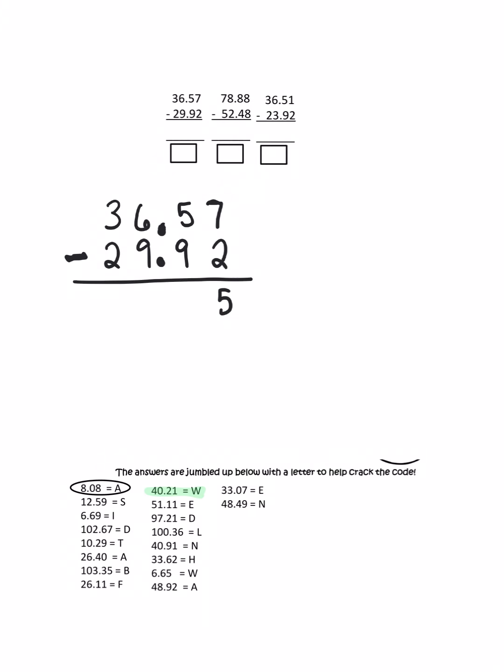Okay, so seven minus two is five. Five minus nine, I can't do it—that would get me a negative number. So I need to come all the way over here and borrow. I'm going to borrow from the three and that becomes a two. My six becomes a sixteen and then I'm going to borrow from that. So that brings me to fifteen minus nine, which is six.